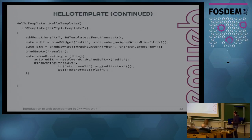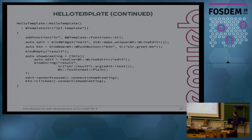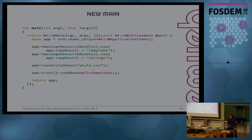For the showGreeting function, instead of capturing the line edit, we can use the resolve() function to find the edit variable inside the template. If it finds it and can cast it to the requested type, it returns a pointer; otherwise it returns a null pointer. With bindString() you can bind a string to a variable — we'll use this for the results. We set the text format to plain again because the default is XHTML.